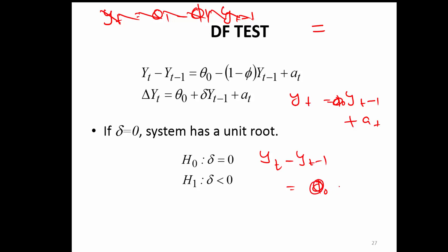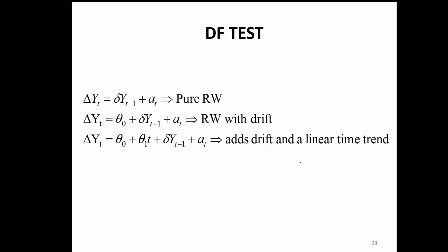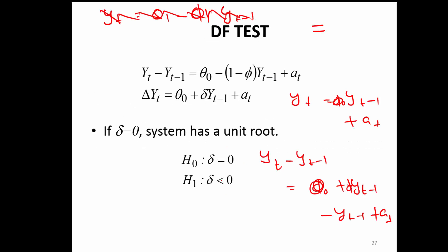This is just delta y_t. So delta y_t is equal to theta_0 plus, we can take y_t out, so y_t minus 1, and inside we have 1 minus phi.